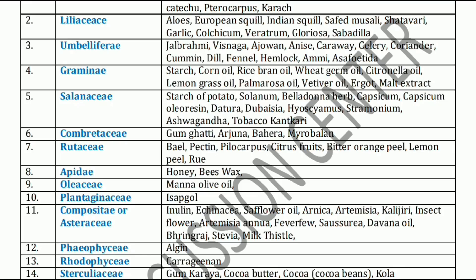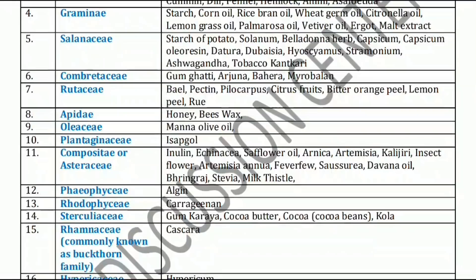Next family is Solanaceae family. Solanaceae family includes starch of potato, Solanum, Belladonna herb, Capsicum, Capsicum oleoresin, Datura, Duboisia, Hyoscyamus, Stramonium, Ashwagandha, Tobacco, and Kantakari. One major important point: all tropane alkaloids — Belladonna, Datura, Hyoscyamus, Stramonium — come under the Solanaceae family.